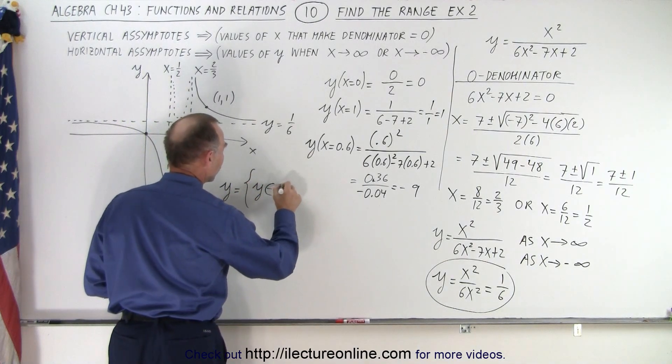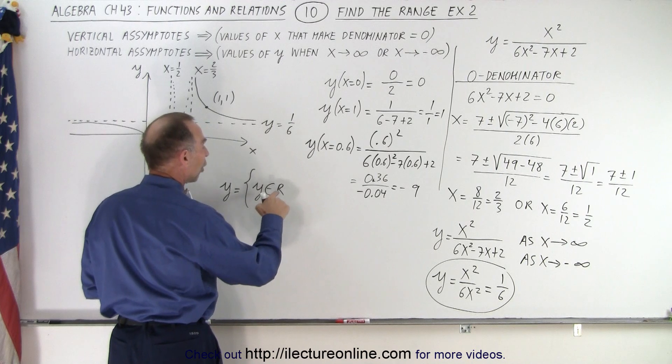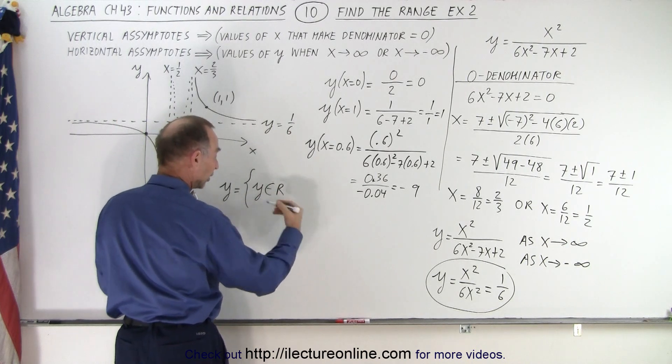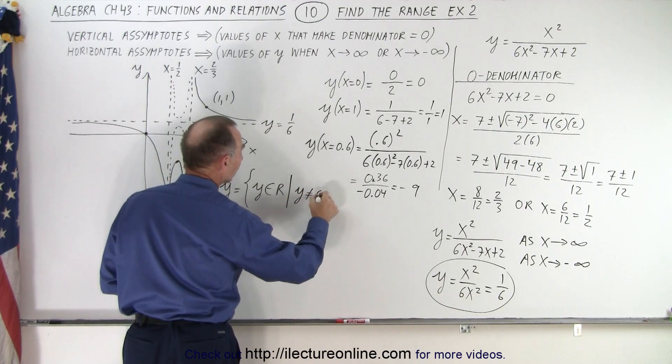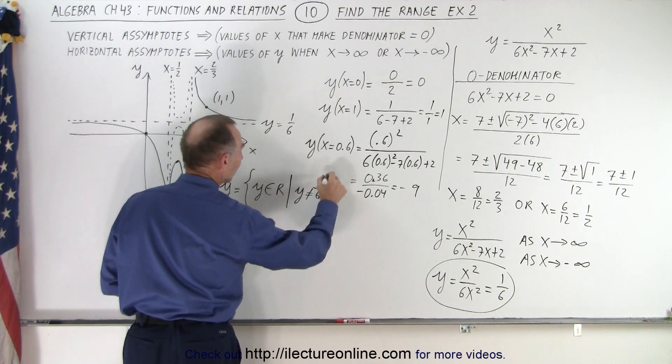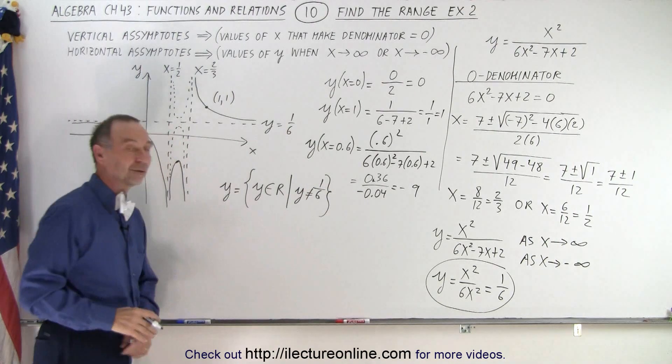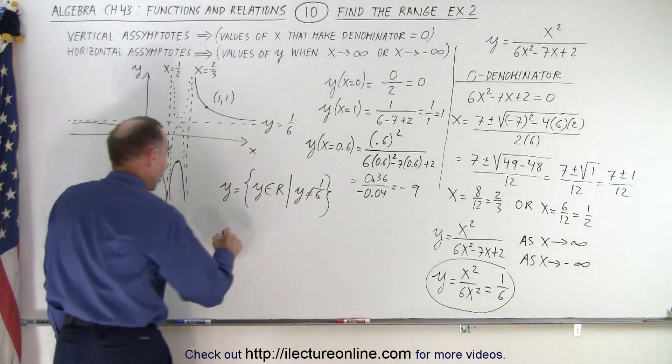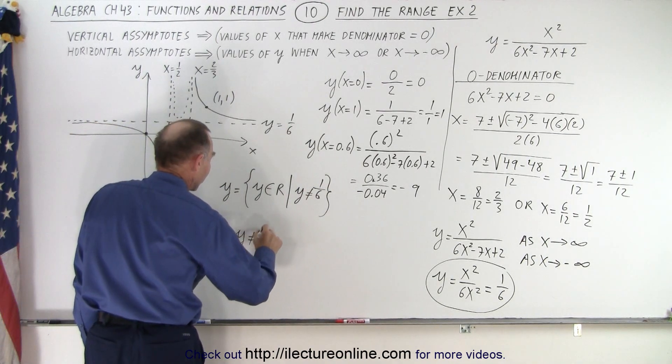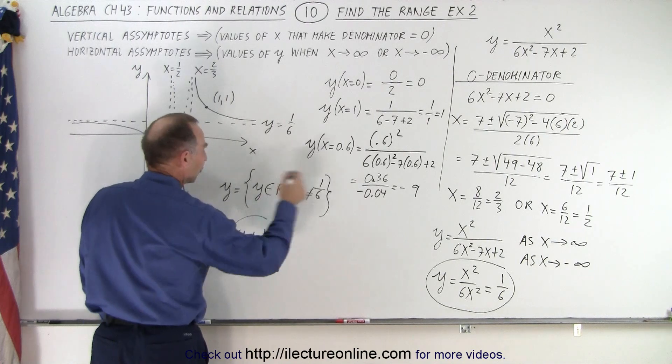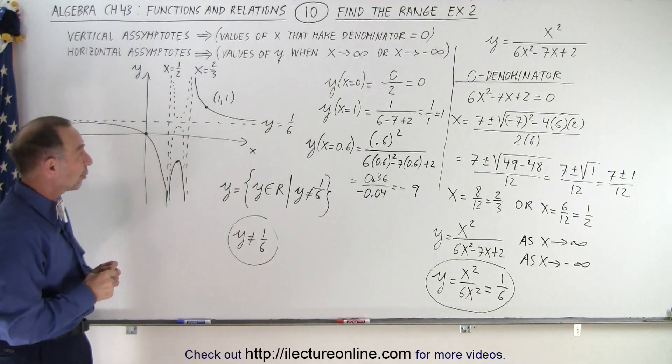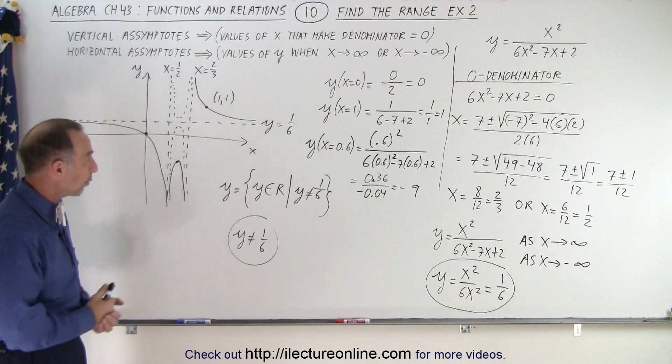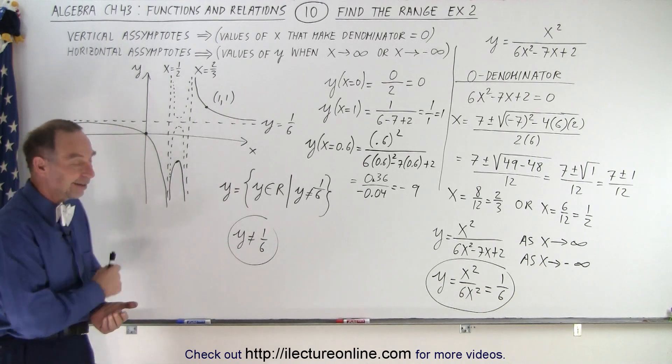In other words, we can say that y is equal to all the values for y. It's an element of all the real values. In other words, y can have all values in the real number system except for y is not equal to 1 over 6. And that's one way to write it. Or you could simply say all values such that y is not equal to 1 sixth. So either way of writing it, the fancy way or the simple way, the range for y can be all values except for y equals 1 sixth. And that is how it's done.